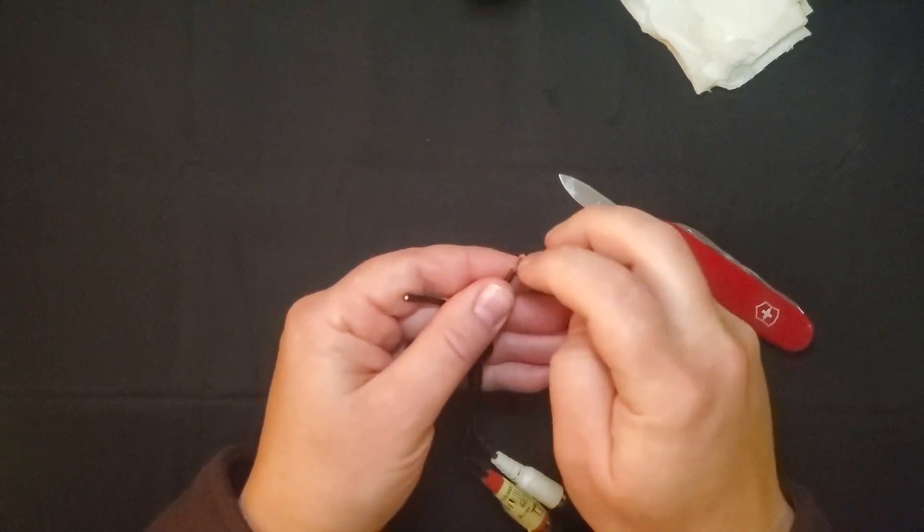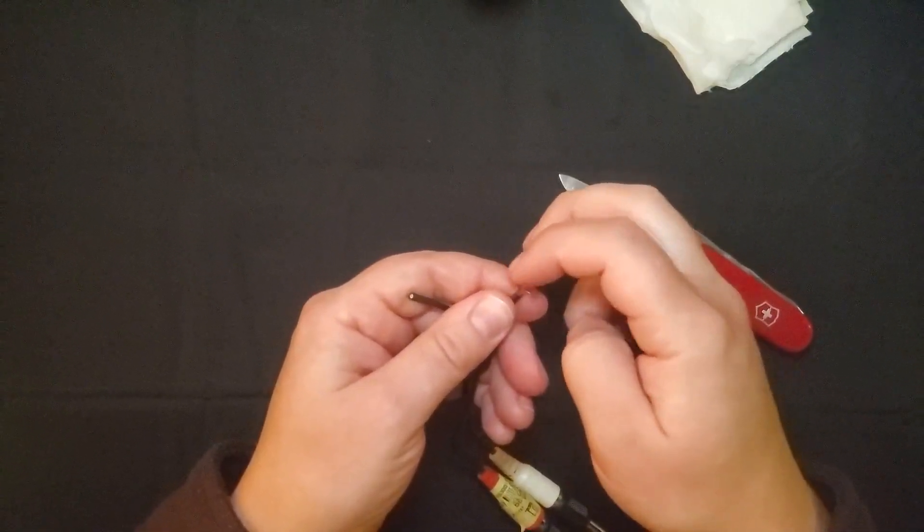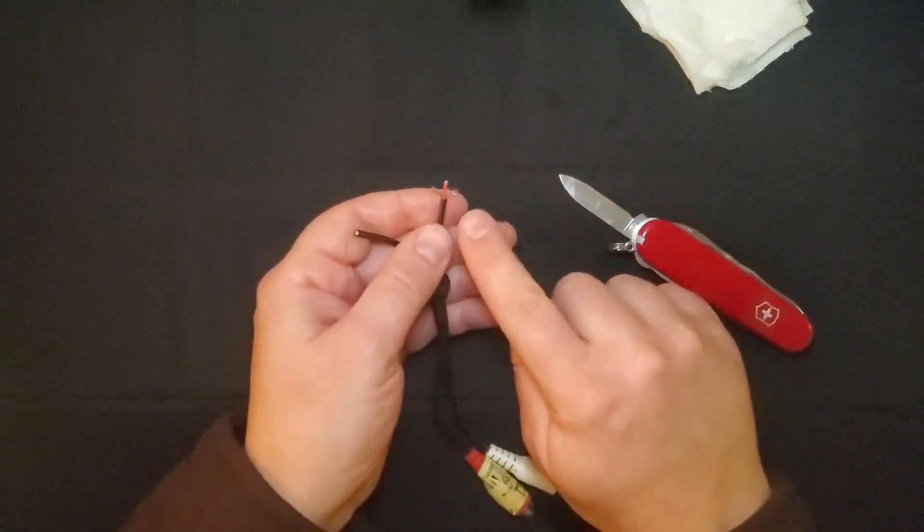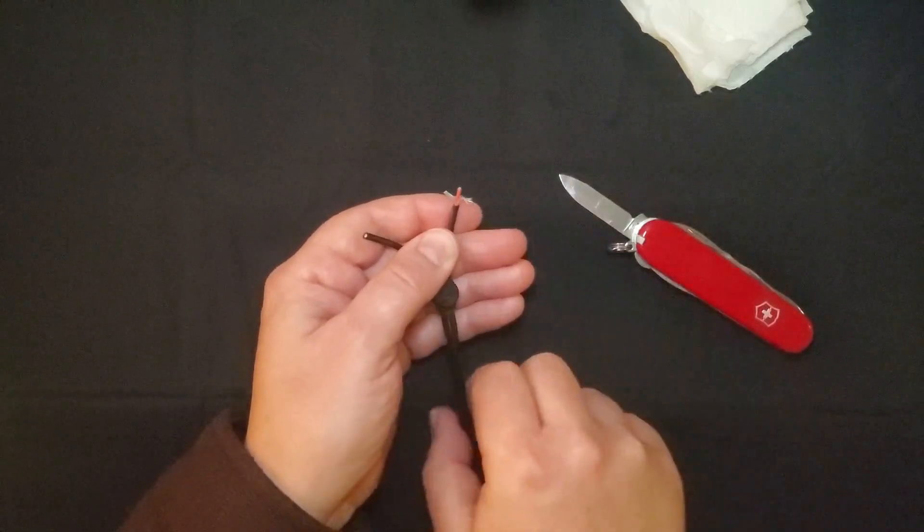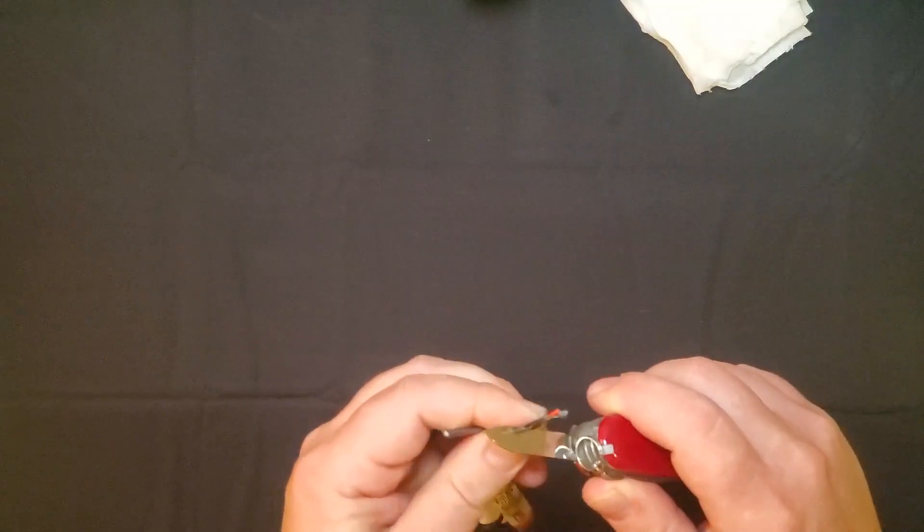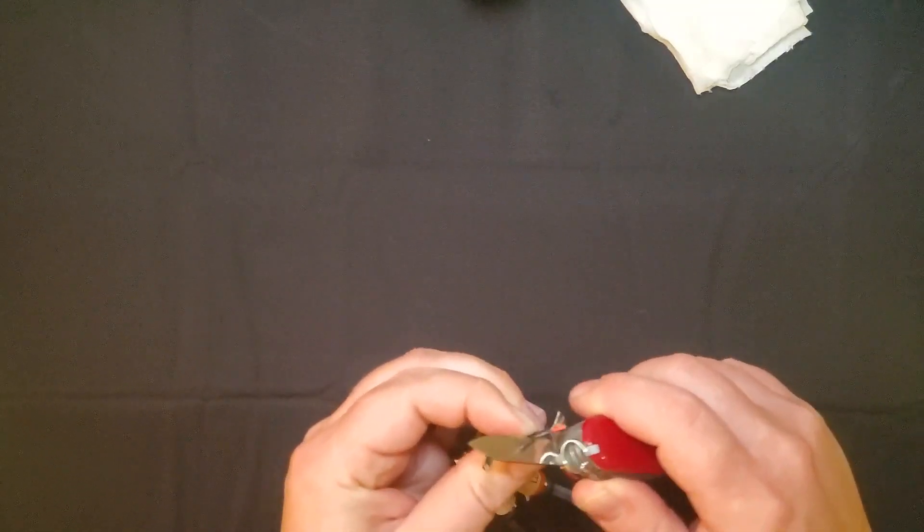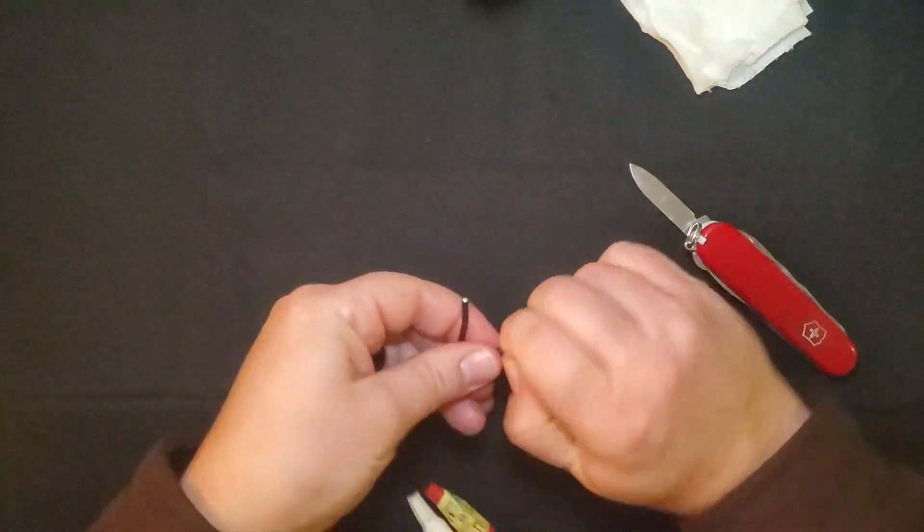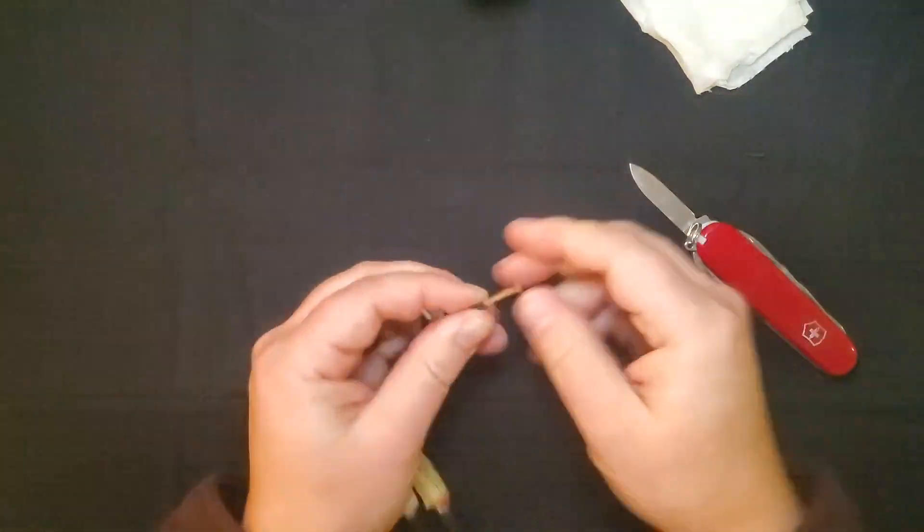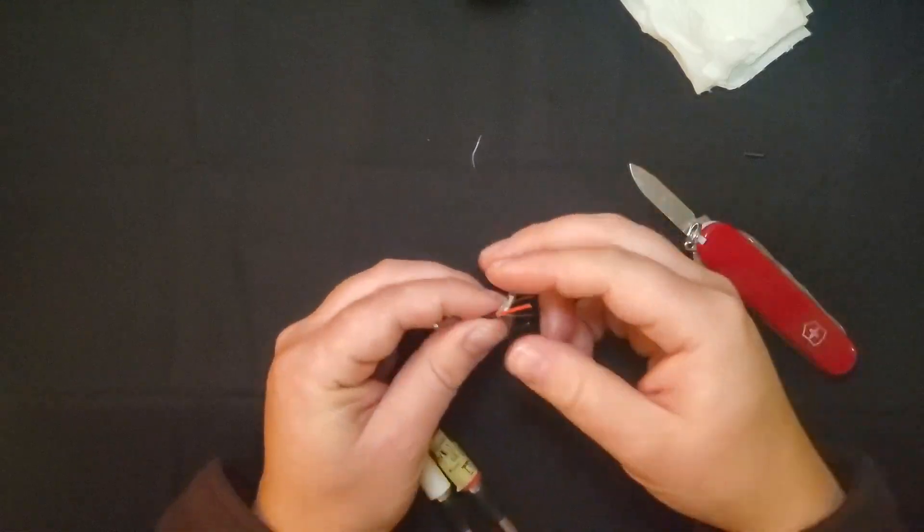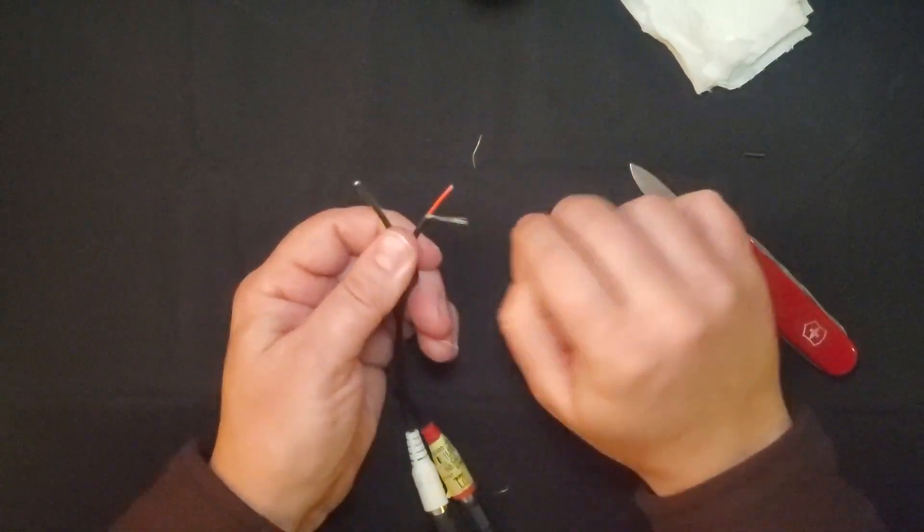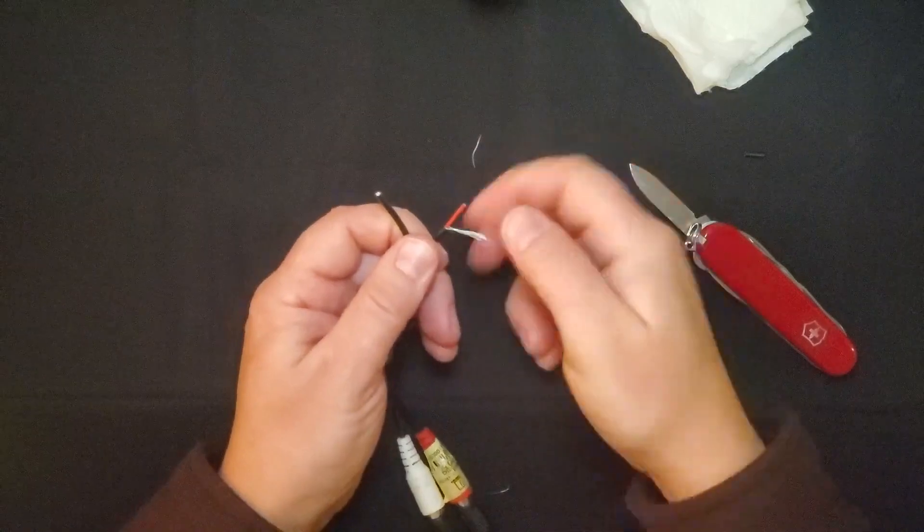So here I've removed the sleeve and you can see inside. There are many copper strands here surrounding the red wire in the center. I'm going to remove more of the sleeve so that I can have more of that copper exposed, so I've got more to solder to. And I'll twist those together to keep them all neatly in a group.